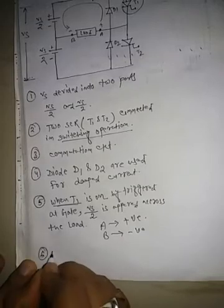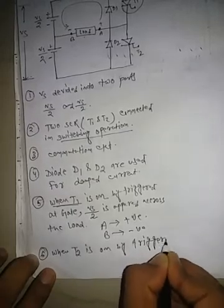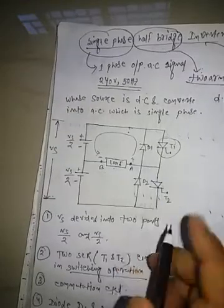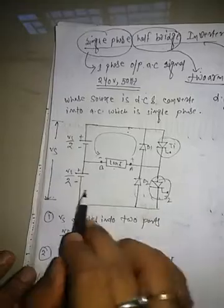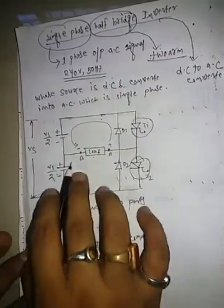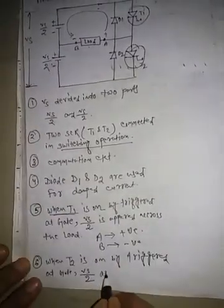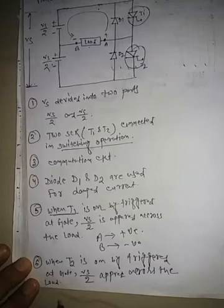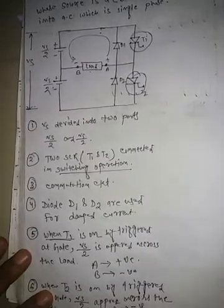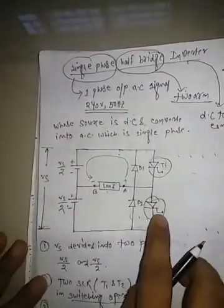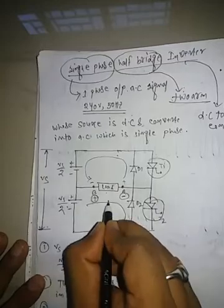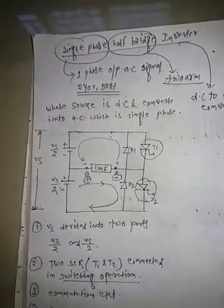When T2 is triggered by a gate pulse, T2 turns on and Vs/2 also appears across the load. But now terminal A becomes negative and terminal B becomes positive. So current flows in the opposite direction. This is the circuit operation.